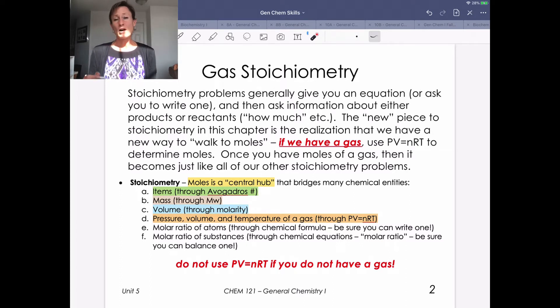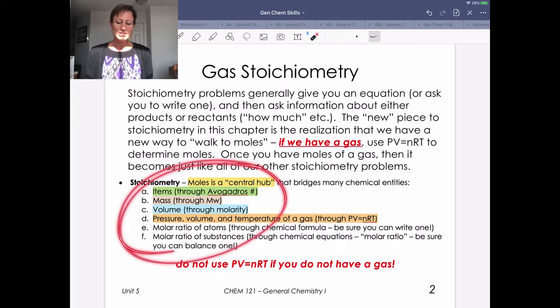This could be a way to add a little bit of a twist to a PV equals NRT problem, because maybe we're not given quantity in moles. Maybe we're given just some information that we need to then use PV equals NRT as an unknown variable problem to get to moles. And then we do stoichiometry.